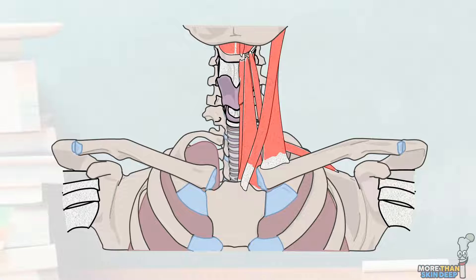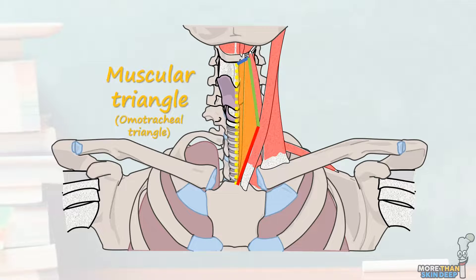The muscular triangle is one of the four subdivisions of the anterior triangle of the neck. It's sometimes also called the omotracheal triangle. Calling it a triangle is really a bit of a lie because it's actually got four sides, but let's roll with it. Today we'll cover its boundaries and contents in detail. If you've not already watched my video giving an overview of the anterior triangle of the neck, I suggest you check it out now as it will give you a nice overview which will help in understanding this video.